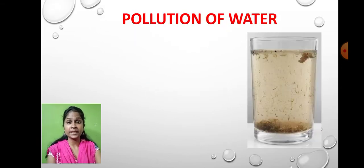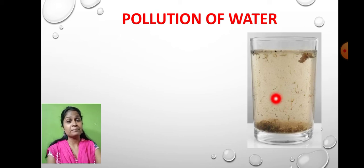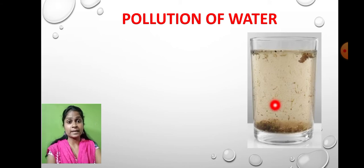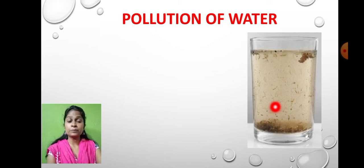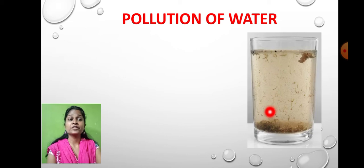In the last session we learned about the meaning of water pollution. As you can see, there are many types of impurities present in water. Some are in soluble format and some in insoluble format. A few impurities float on top of the water and a few settle down at the base.